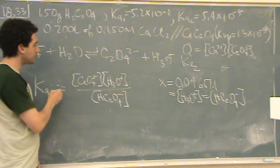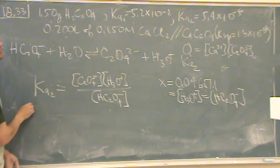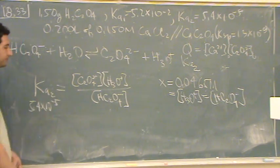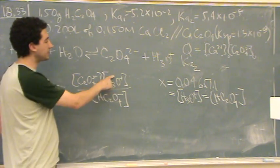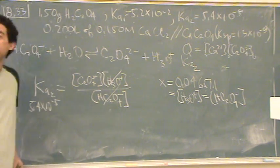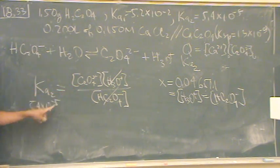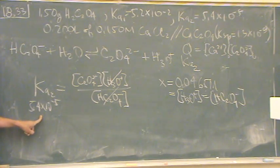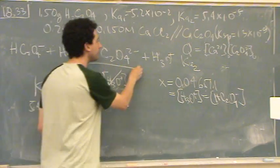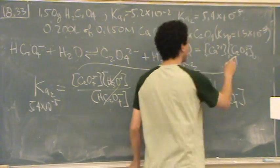You'll notice, oh let me write K2 is 5.4 times 10 to minus 5. You'll notice that since these two concentrations are the same, they cancel out. So this concentration is K2. This is what we want.